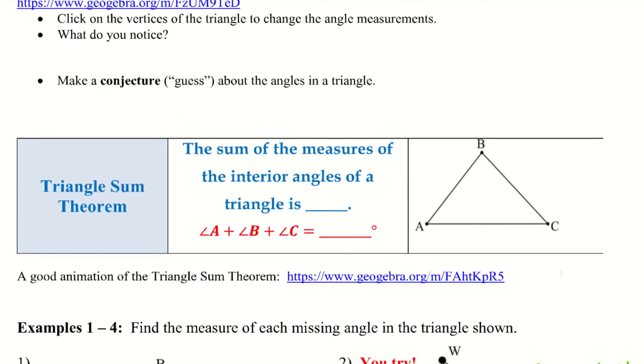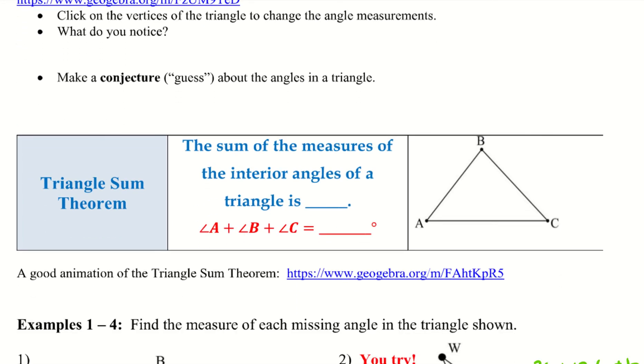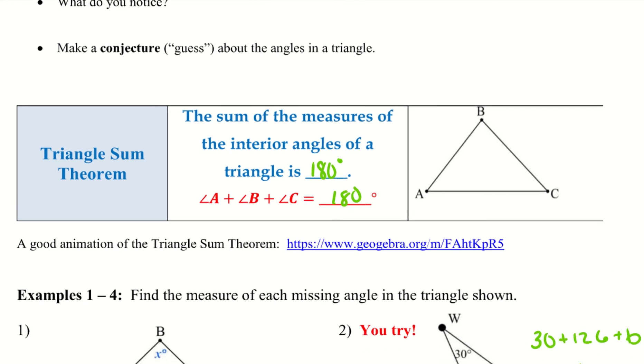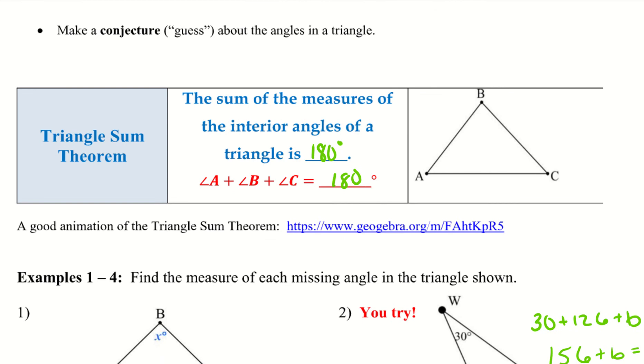Alright, so triangle sum theorem. The sum of the measures of the interior angles of a triangle is 180 degrees. So angle A plus angle B plus angle C should give us 180 degrees. Go ahead and take a second now, pause the video, and check out the animation of the Triangle Sum Theorem.